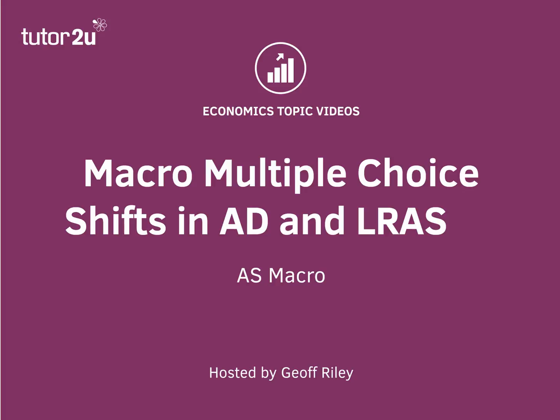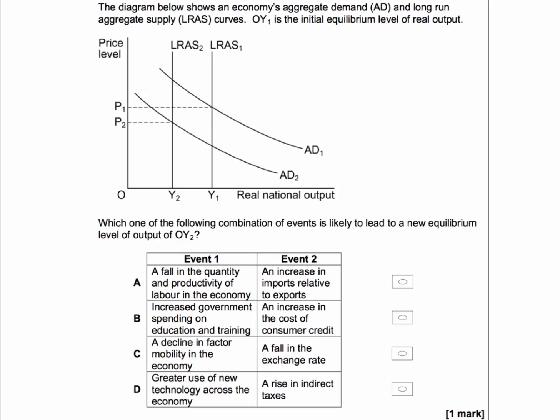It's about shifts in aggregate demand and also a shift in long-run aggregate supply. So here's the question. The diagram below shows an economy's aggregate demand, AD, and long-run aggregate supply curves. OY is the initial equilibrium level of real GDP.